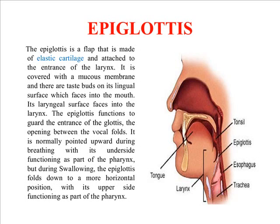The epiglottis is a flap made of elastic cartilage attached to the entrance of the larynx. It is covered with a mucous membrane, and there are taste buds on the lingual surface which faces the mouth. The epiglottis allows one function at a time — either we can eat, swallow, or talk. The epiglottis prevents food particles from entering the respiratory system, so it acts as a small wall or valve.